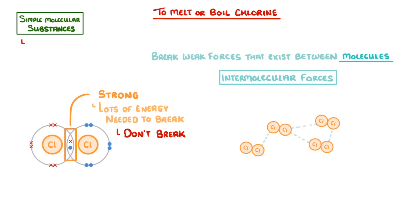Because of this, we only need very low temperatures to melt or boil simple molecular substances. For example, chlorine boils at minus 34 degrees Celsius.